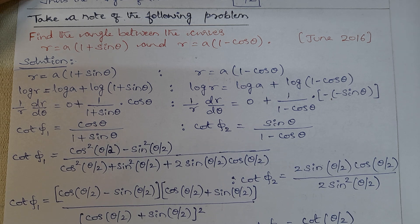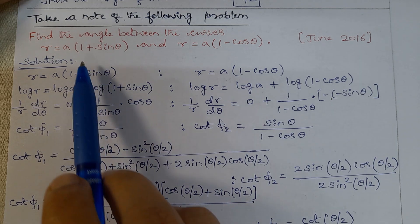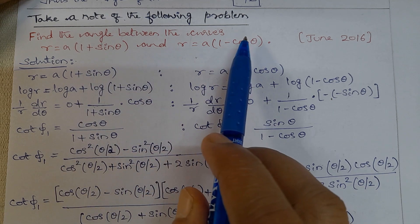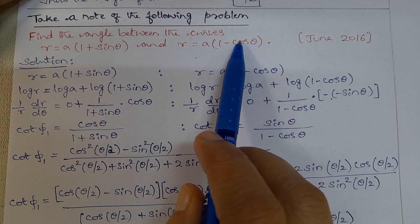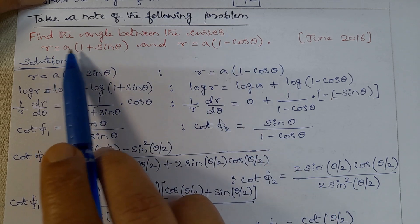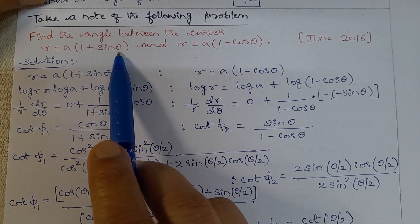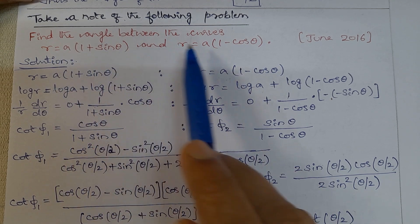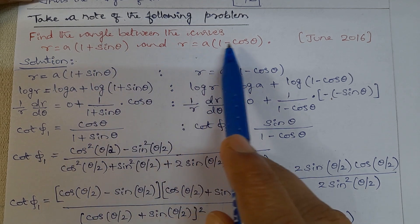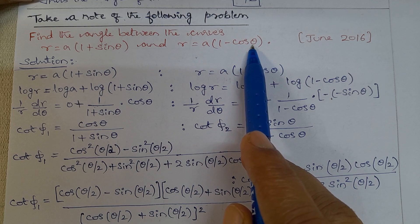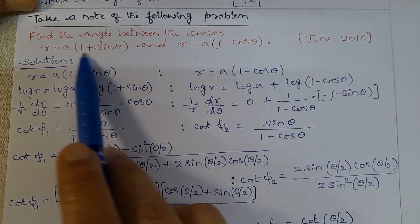Namaste. Engineering Mathematics Module, Differential Calculus 1. Find the angle between the curves r equal to a into 1 plus sin theta, and r equal to a into 1 minus cos theta.